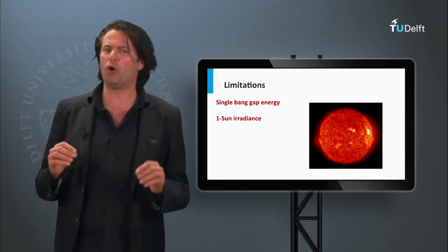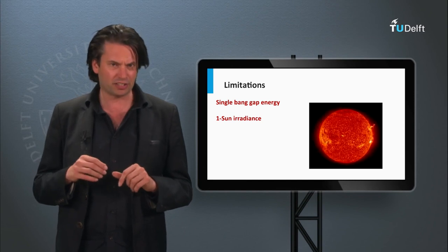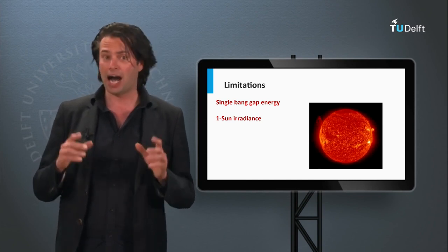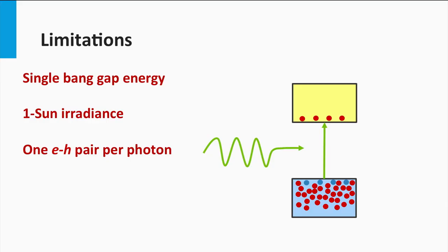The arrows on the right indicate how much energy is wasted as heat. Secondly, most solar cell concepts are based on irradiance incidence of one sun. Higher irradiance means more current generation. Thirdly, every photon only excites one electron in the conduction band, creating only one electron-hole pair.